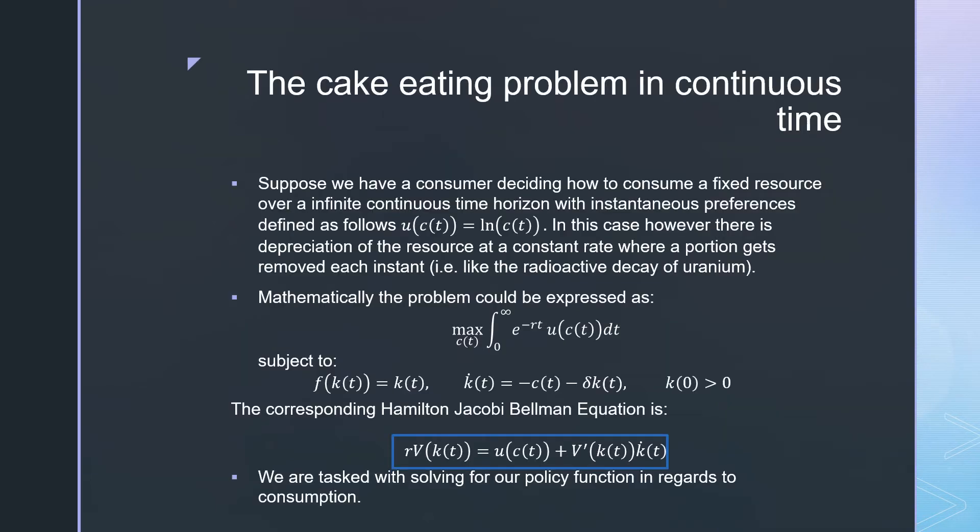The story of this problem is the same as last time with a couple caveats. We're gonna have a consumer deciding how to consume a fixed resource over an infinite continuous time horizon with instantaneous preferences denoted by ln(c). Key in this case, however, the depreciation of the resource is going to be at a constant rate where a portion gets removed at each instant. We can think of this like the radioactive decay of uranium.